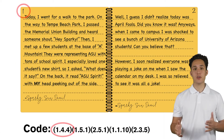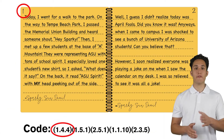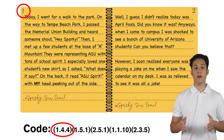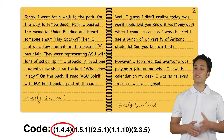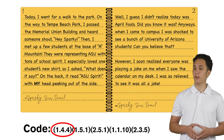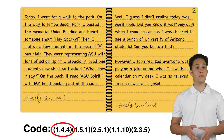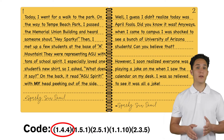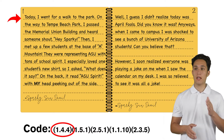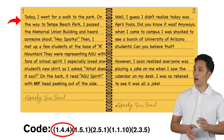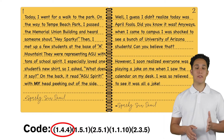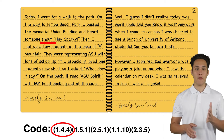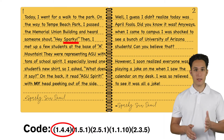Looking at the first code, we can see that the first number is 1. 1 is the page number. The second number is the line number, so four lines down: 1, 2, 3, 4. Now the fourth word on the fourth line is Sparky.